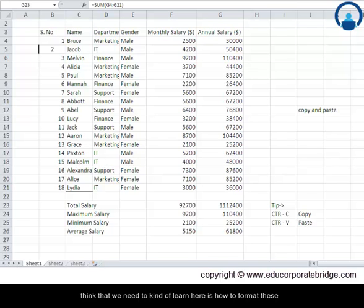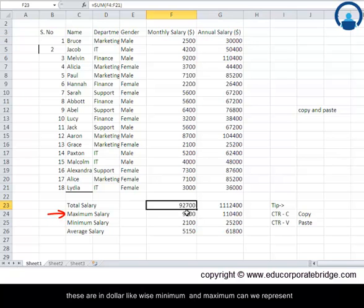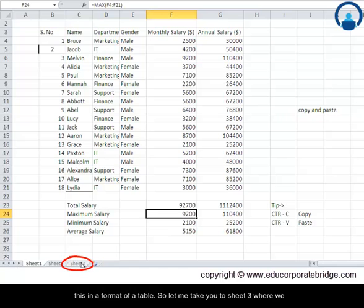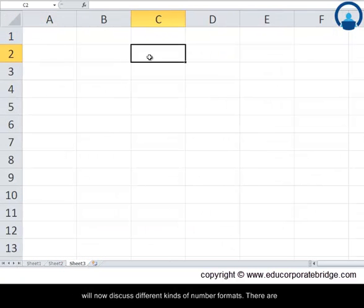First thing we need to learn here is how to format these numbers. These numbers are essentially monthly salaries, annual salaries. These are in dollars, likewise minimum, maximum—can be represented in a format of a table. Let me take you to Sheet 3 where we will now discuss different kinds of number formats.